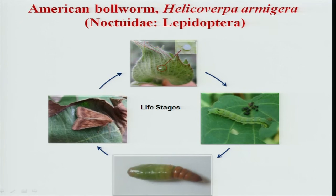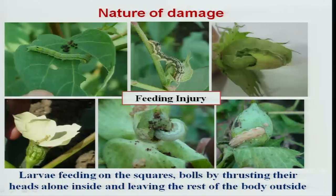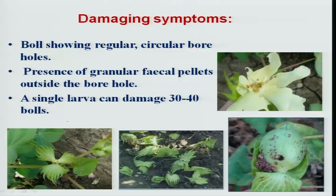Up to this point we have seen the various sucking pests occurring on cotton. Now we will see the bollworm complex, which causes direct damage. These pests occur across different ecosystems and cause damage on developing bolls, squares, and flowers, with heavy square shedding due to characteristic feeding.